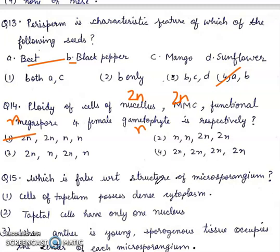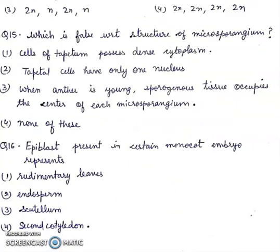Question 15. Which is false with respect to structure of microsporangium? Four statements are given. Right answer will be 2nd: tapetal cells have only one nucleus, because tapetal cells are multinucleate, that's why 2nd statement is false.